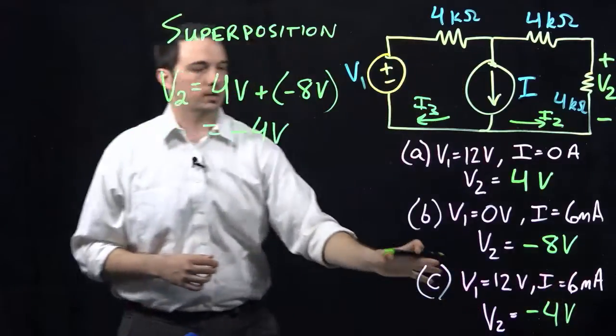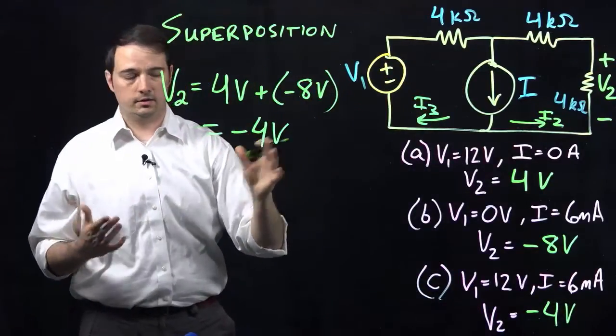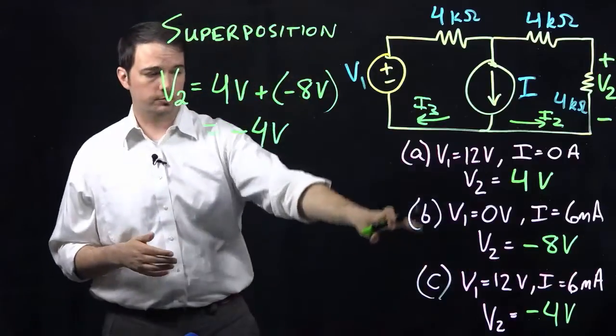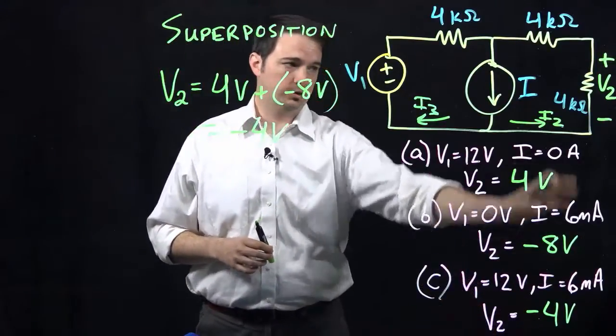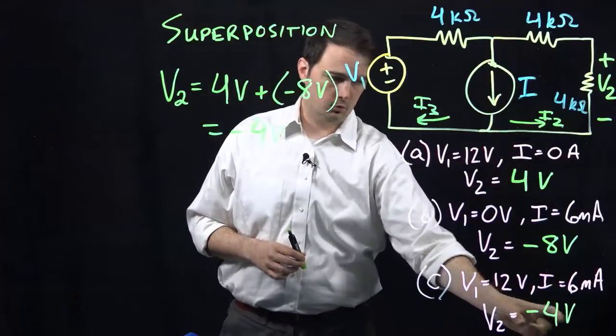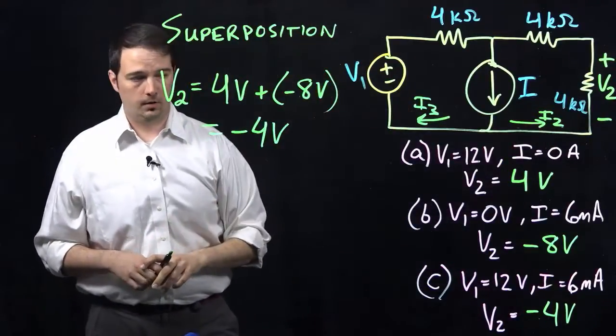So again, this is just indicating that if both of these sources are active and their values are unchanged from the previous parts, then the combined effect on this voltage V2 is going to be that that voltage will be a negative four volts overall. And so that's, you know, obviously this is a much simpler way,